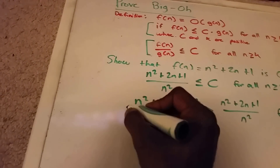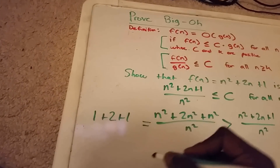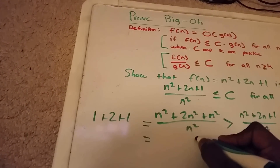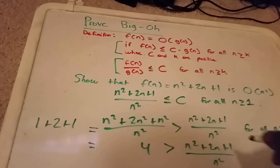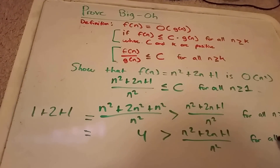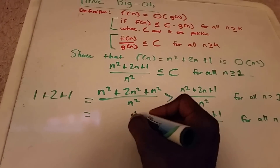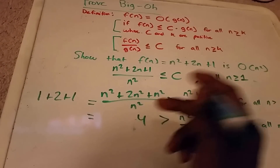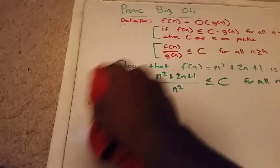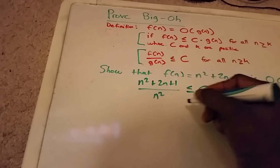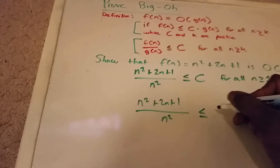So this equals 1 plus 2 plus 1, which equals 4. So that means that 4 is greater than n squared plus 2n plus 1 over n squared, for all n greater than 1. So let's choose our constant to be 4. We let c equal 4, such that n squared plus 2n plus 1 over n squared is less than or equal to 4, for all n greater than or equal to 1.